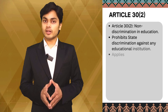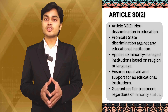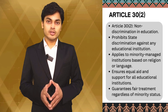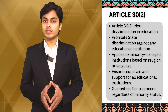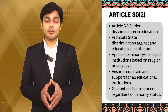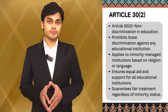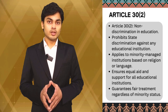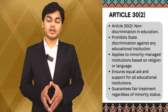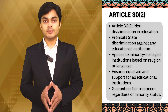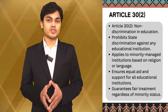Clause 2 of Article 30 is about non-discrimination. It states that the state shall not discriminate against any educational institution managed by a minority based on religion or language in granting aid. This ensures that all educational institutions, regardless of their minority status, receive fair treatment and support from the state.